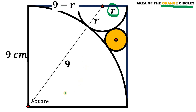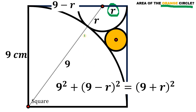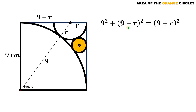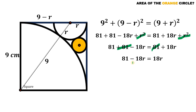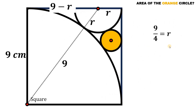Using the Pythagorean theorem, we have 9² + (9 − R)² = (9 + R)². Expanding (9 − R)² gives 81 − 18R + R², and (9 + R)² gives 81 + 18R + R². Subtracting R² from both sides cancels it. Subtracting 81 from both sides and adding 18R gives 81 = 36R. Dividing both sides by 36 and simplifying — 81 and 36 are both divisible by 9 — gives R = 9/4 centimeters.